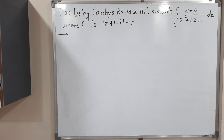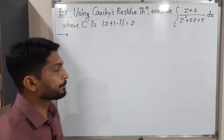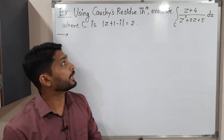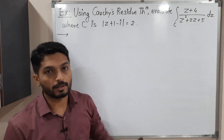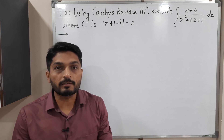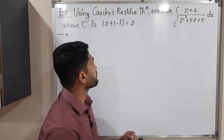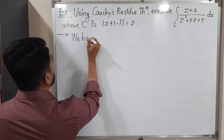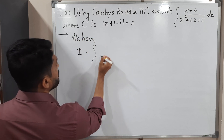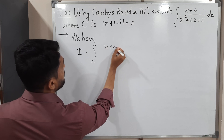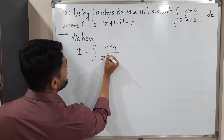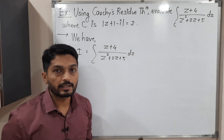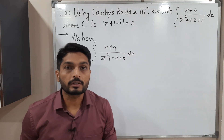Hi everyone. In this video we are going to discuss this example. We have this complex integration and we have to find its value with the help of Cauchy's residue theorem. Let us note down the given integral. We have I is equal to the integration over C of (z + 4) / (z² + 2z + 5) dz.